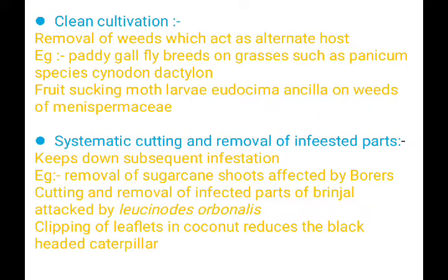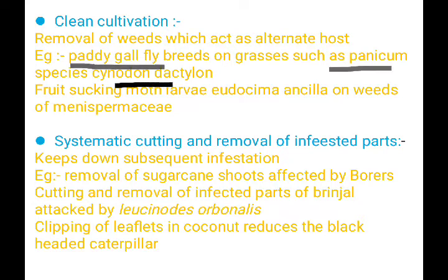Next is clean cultivation. Clean cultivation means weeds and other crops are removed, eliminating the alternate host. For example, paddy gall fly — this is a panicum species. If a panicum species is present, we can clean the plant to remove the alternate host.